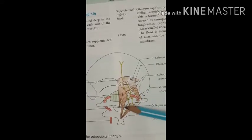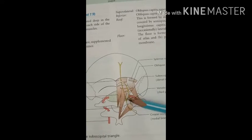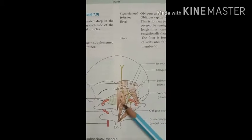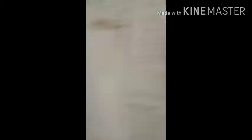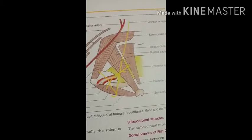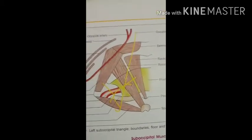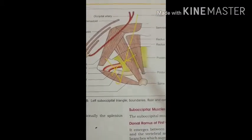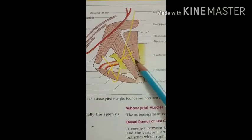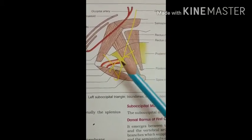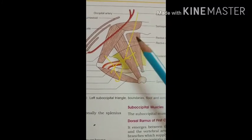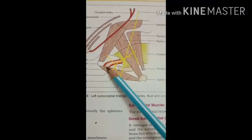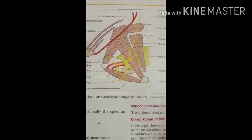This triangular structure bounded by these muscles is called the sub-occipital triangle, and it consists of many vital structures. The first is the sub-occipital plexus of veins. The second is the greater occipital nerve. The third is the dorsal ramus of the first cervical nerve.